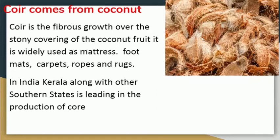Here we have coir. Coir is extracted from the outer covering of a coconut and we also use it as fiber. It is used in making mattresses, foot mats, carpets, ropes, and rugs. It is mainly found in coastal areas like Kerala, Karnataka, Tamil Nadu, etc.